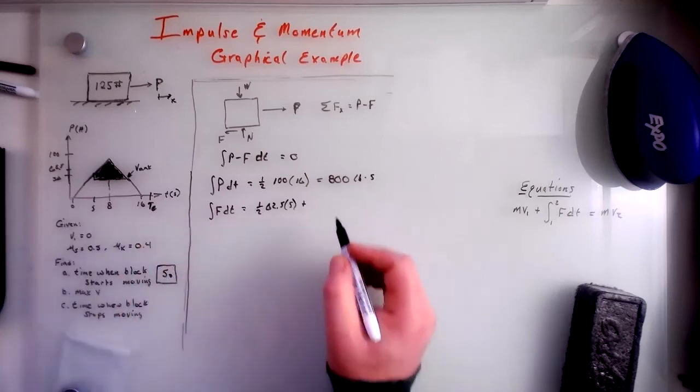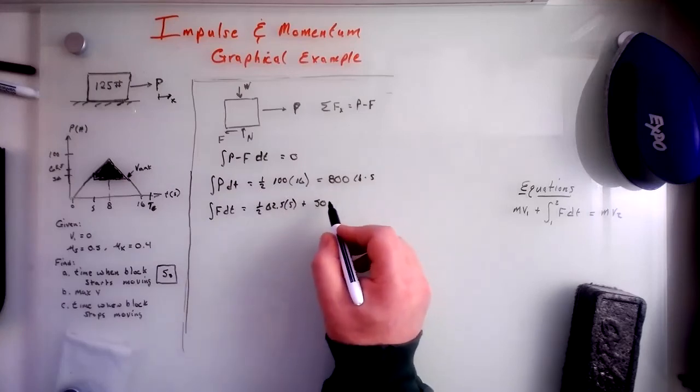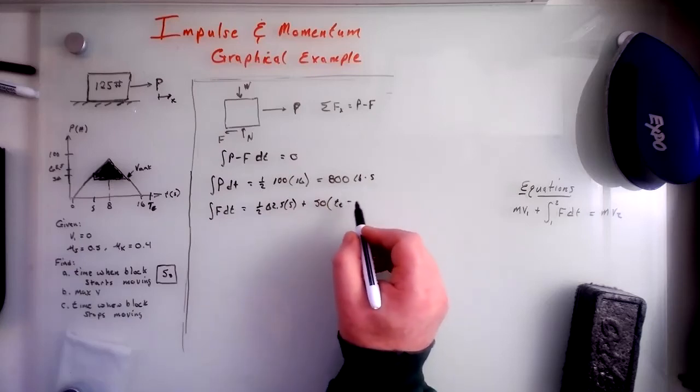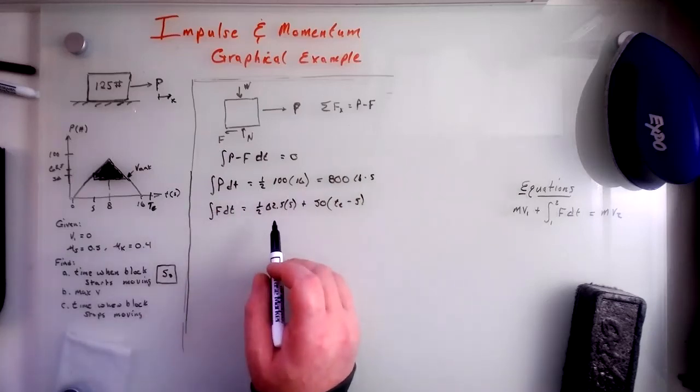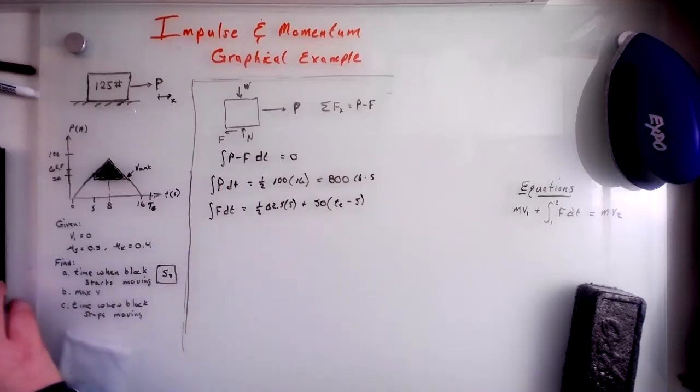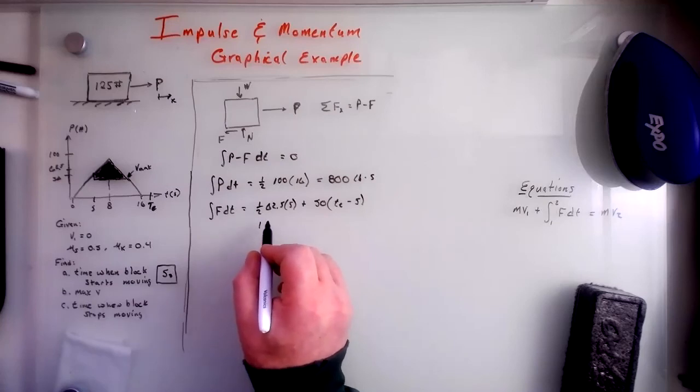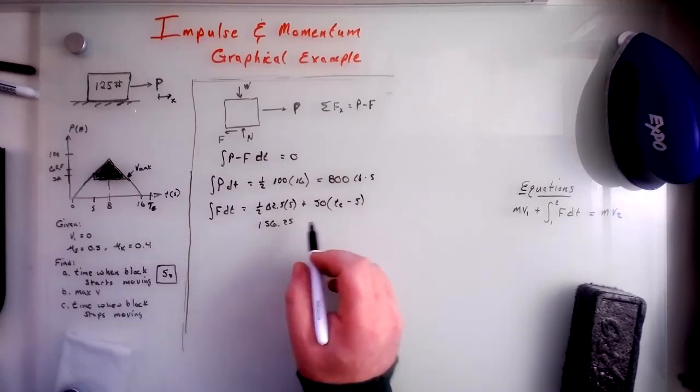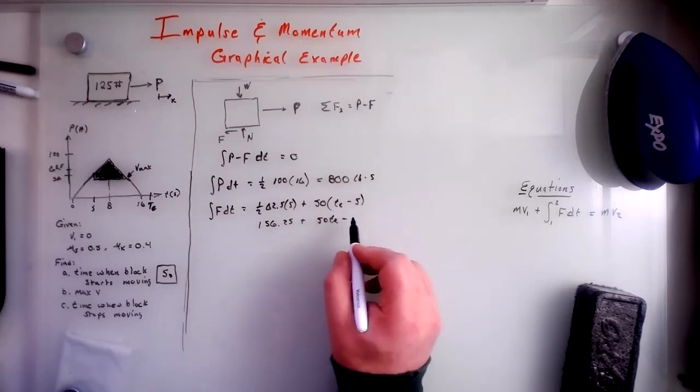So plus 50 times T E minus five, right? And so, if we can solve this 6250, this is 156.25. And then plus 50 T E minus 250.